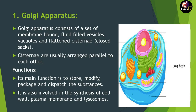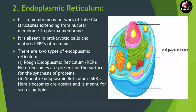The next cell organelle is the endoplasmic reticulum, seen as a green structure around the nucleus. It is a membrane network of tube-like structures extending from the nuclear membrane to the plasma membrane. It is absent in prokaryotic cells and also absent in mature RBCs (red blood corpuscles) of mammals.